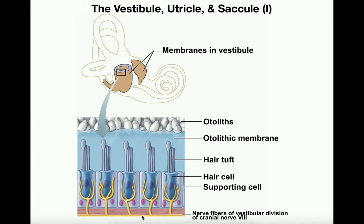Here's your head in the upright anatomical position. The otoliths are attached to the otolithic membrane and the hair tufts are embedded in it. Since there's no disturbance of equilibrium — no acceleration, no bending of the neck — the hair tufts are not being bent at all. Now imagine this person performs a neck flexion, looking downward toward the floor. When the head tilts forward, the otoliths move in the direction of the force of gravity — forward — pulling the otolithic membrane and the hair tufts in that same direction.